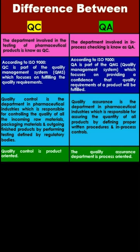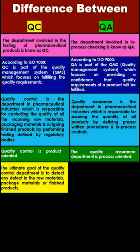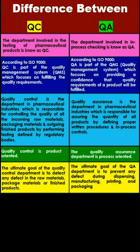QC is product-oriented. The QA department is process-oriented. The ultimate goal of the quality control department is to detect any defect in the raw material, packing material, or finished product. The ultimate goal of the QA department is to prevent any defect during dispensing, manufacturing, printing, and packaging.